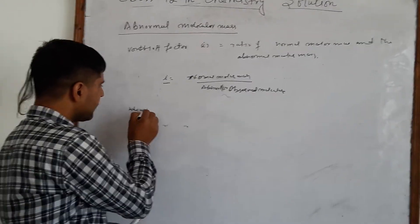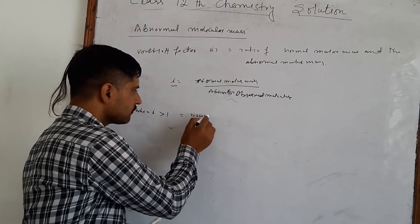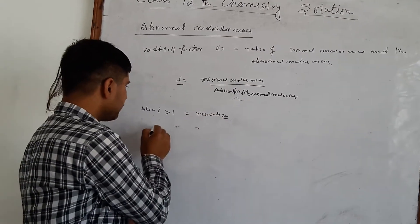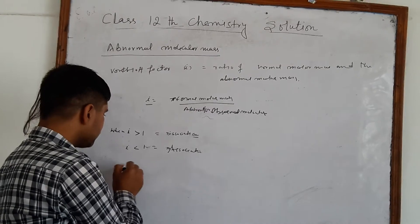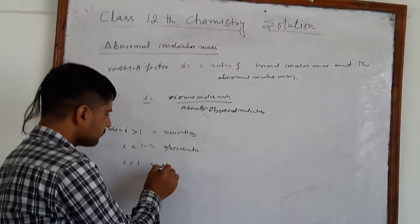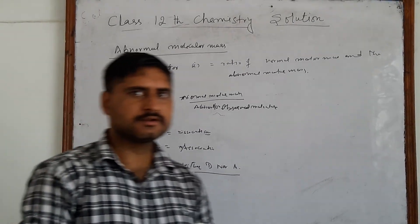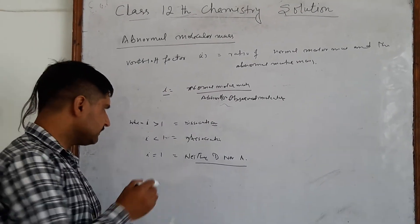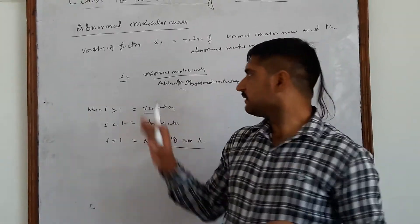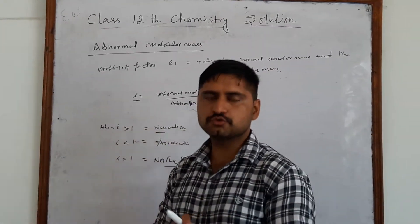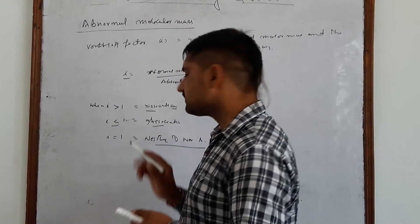There are three cases for the Van't Hoff factor i. When i is greater than 1, it means there is dissociation of the solute. When i is less than 1, there is association. And when i equals 1, there is neither association nor dissociation of the solute molecules. The reason why i is greater than 1 during dissociation is that the number of solute particles increases.